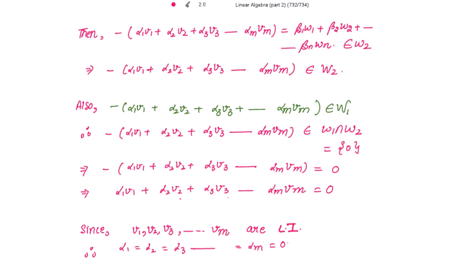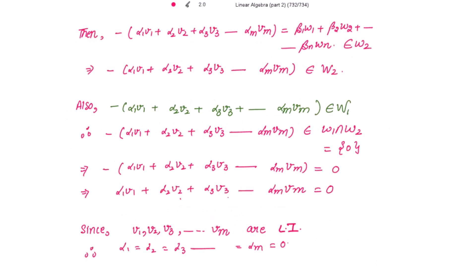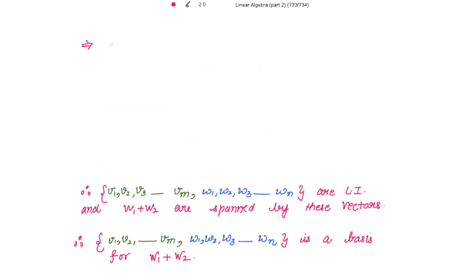Let me mark this as equation 1. Since all alpha1, alpha2, alpha3, ..., alpha_m are 0, this complete part is 0, and we have the remaining part. From equation 1 we can write: beta1*w1 + beta2*w2 + ... + beta_n*wn equals 0.